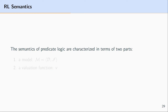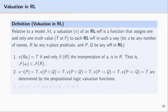So just a quick review: the semantics of predicate logic are characterized in terms of two parts. The first part is known as a model, which consists of a domain of discourse and an interpretation function. This video will focus on the valuation function. We'll present part of the definition and focus on a certain aspect of it.